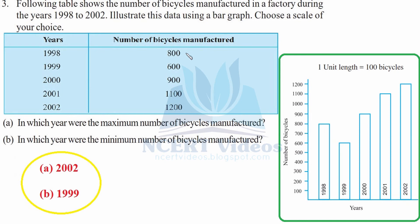For 1998, we have 800, so we draw the bar up to a height of 800. For 1999, we have 600, so the height goes up to 600. For 2000 we have 900, for 2001 we have 1100 bicycles manufactured, and for 2002 we have 1200.